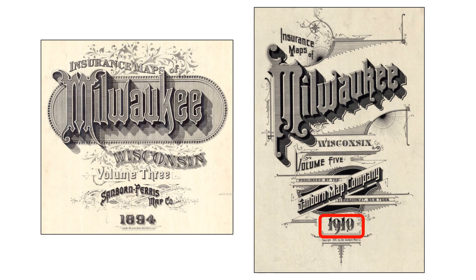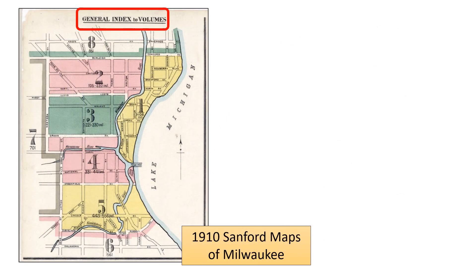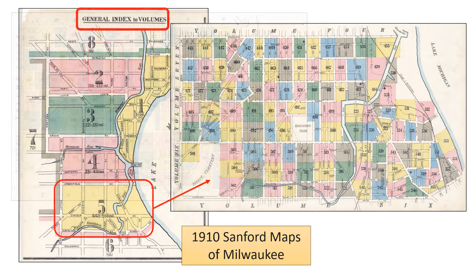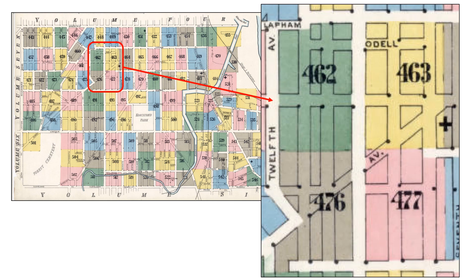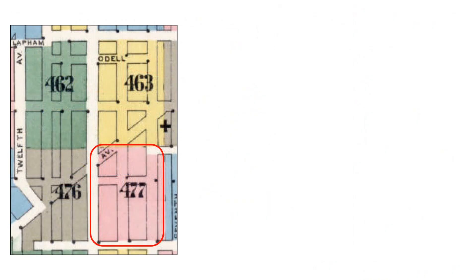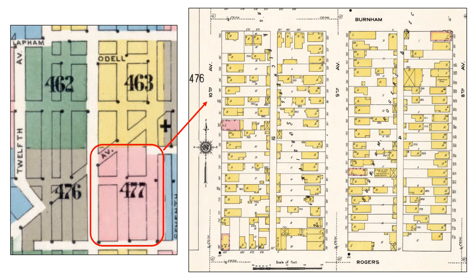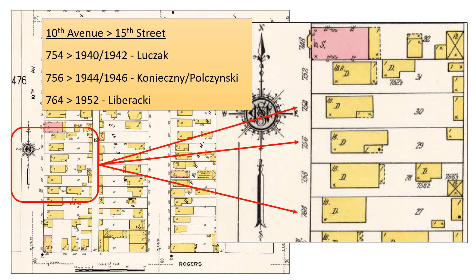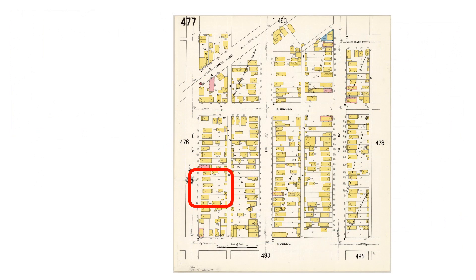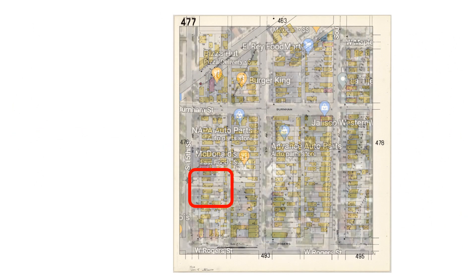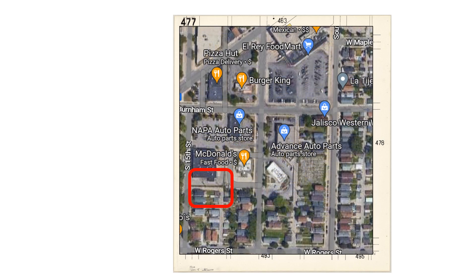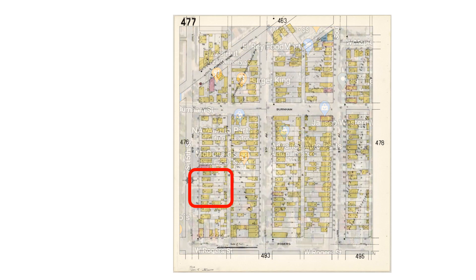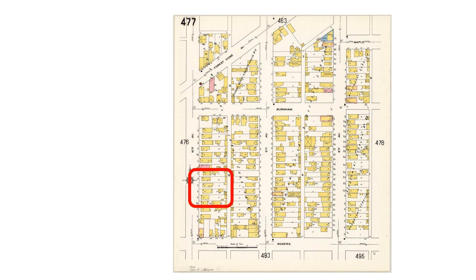It turns out that these sources have Sanborn maps of Milwaukee only for the years 1894 and 1910, so we'll follow the 1910 maps set. The general index for the Sanborn maps shows that we are interested in volume 5. Zooming in on the volume 5 index shows the specific map sheets that lie along 10th Avenue. Going to map sheet 477 takes us to a map containing 10th Avenue, and zooming in takes us to the addresses that we are looking for. Superimposing the modern Google map onto the Sanborn map shows how things have changed over time.